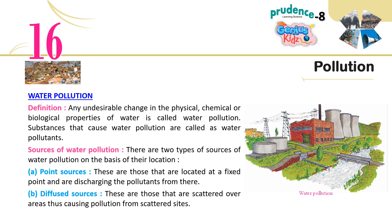Water Pollution definition: Any undesirable change in the physical, chemical or biological properties of water is called water pollution. Substances that cause water pollution are called water pollutants. Sources of water pollution: There are two types on the basis of their location — point sources, which are located at a fixed point and discharge pollutants from there; and diffused sources, which are scattered over areas causing pollution from scattered sites.